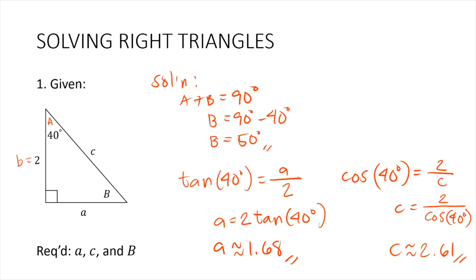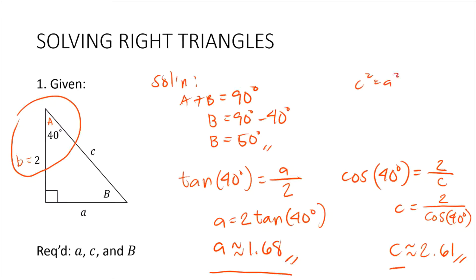It is highly suggested that we use whatever is known in the problem, so that we can reduce the chances of making errors in our calculations. For instance, if we used the calculated value for A to solve for C using the Pythagorean theorem, and that value was wrong, it would result in a wrong value for C. Using known quantities ensures we plug in correct values.